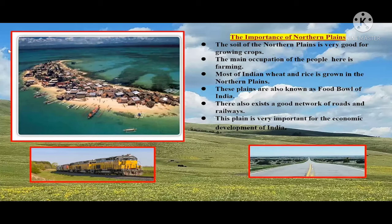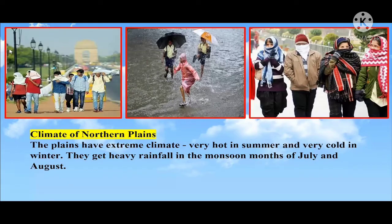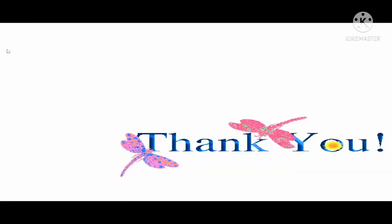Let's discuss the climate of the Northern Plains. The plains have extreme climate — very hot in summer and very cold in winter. They get heavy rainfall in the monsoon months of July and August. With this, we have completed the discussion of chapter 13, the Northern Plains. Hope this video will be useful for you all.